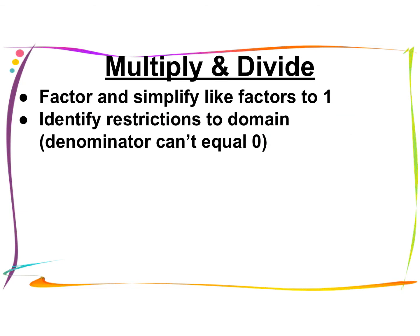So when we multiply and divide rational expressions, we're looking to factor and then simplify those like factors to 1. You should identify your restrictions to the domain because we don't want the denominator to equal 0. Nice job.